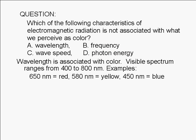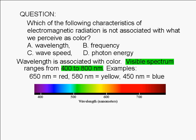Wavelength is associated with color. For us to be able to see electromagnetic radiation, its wavelength must be between 400 and 800 nanometers. This is known as the visible spectrum. For example, we perceive electromagnetic radiation with a wavelength of 650 nanometers as red.